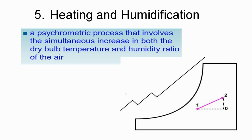Moving towards the next process: heating and humidification. This process is not used as frequently, but in cold places we use a heater directly. It is a psychrometric process that involves the simultaneous increase in both dry bulb temperature and humidity ratio of the air, from point one to two where specific humidity is increased and temperature is also increased.